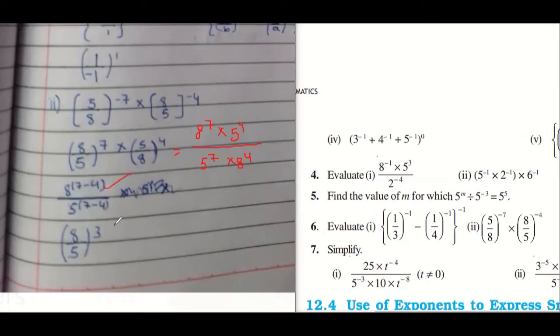So 8 and 8, it is correct. But we normally take it to the top. This is also correct, but what I would have done is this way: 8 to the power of 7 minus 4 multiplied by 5 to the power of 4 minus 7. We take it to the numerator. 8 to the power of 3 multiplied by 5 to the power of minus 3. Then I would have taken it this way. And this is the answer.